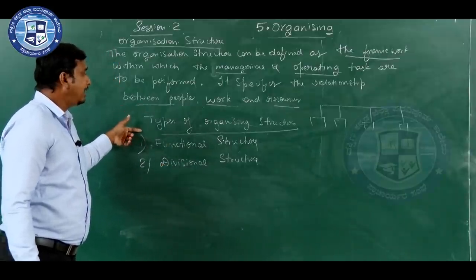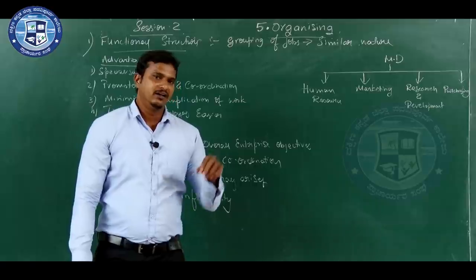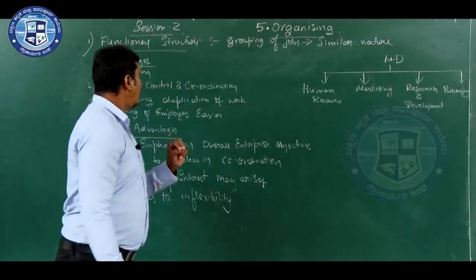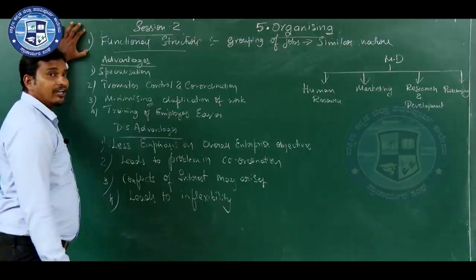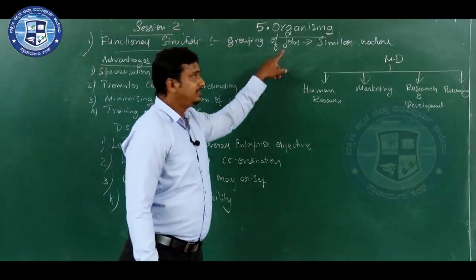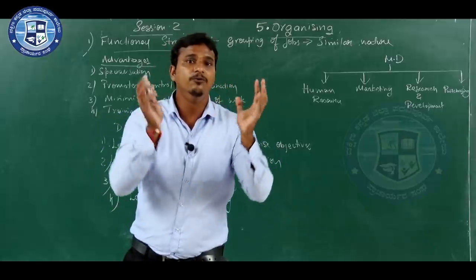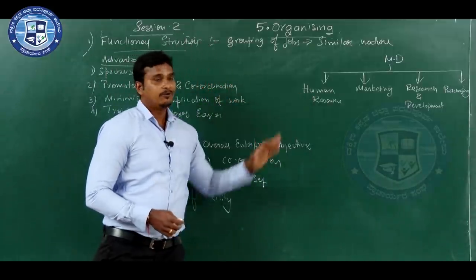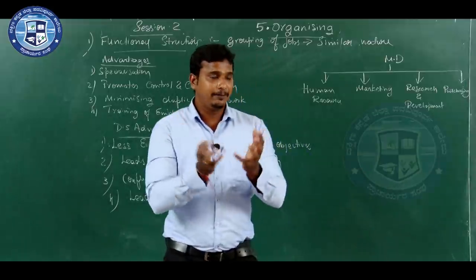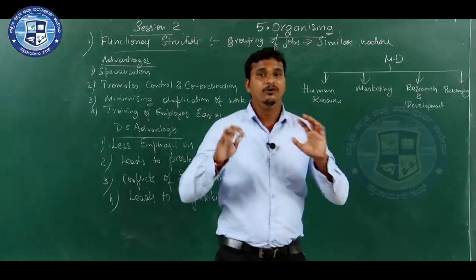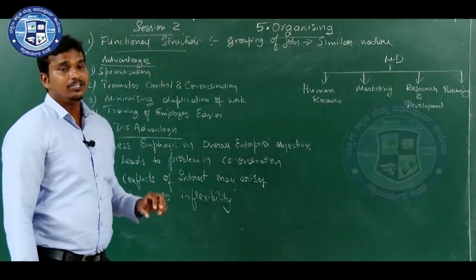Let us discuss the two types of organizing structure — functional structure and divisional structure. Functional structure of an organization means grouping of jobs which are of similar nature. One kind of job will be grouped together — like human resource will be departmentalized, or marketing as one particular department. Research and development will be grouped together as one department, which performs one particular kind of job.